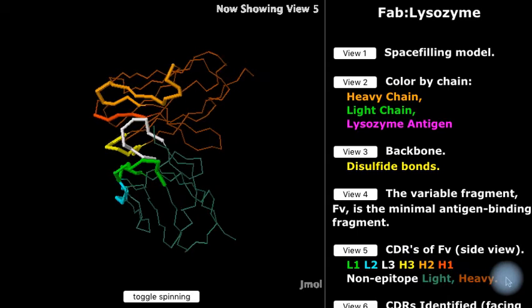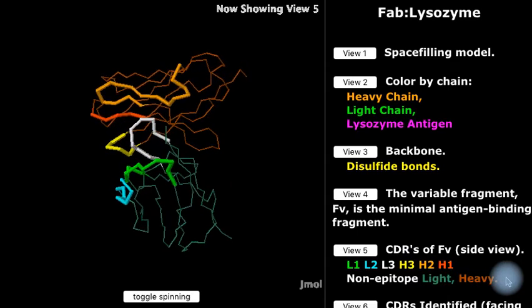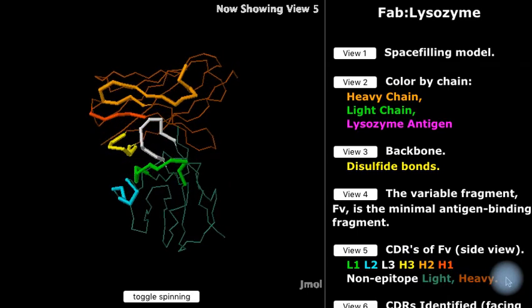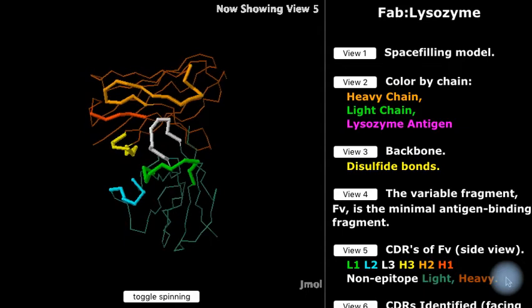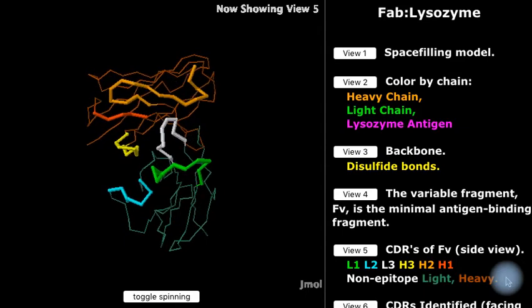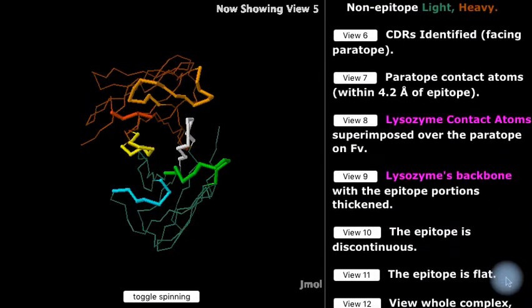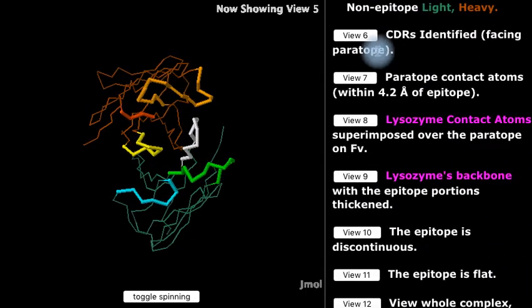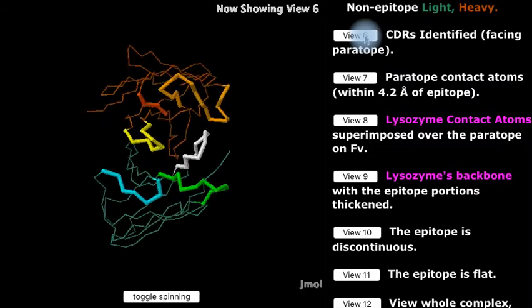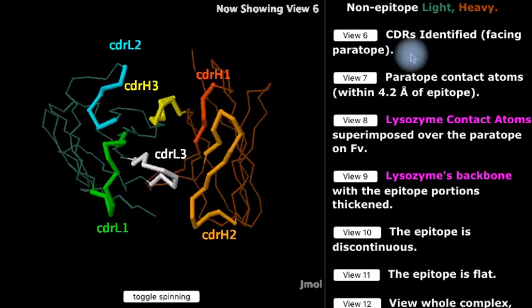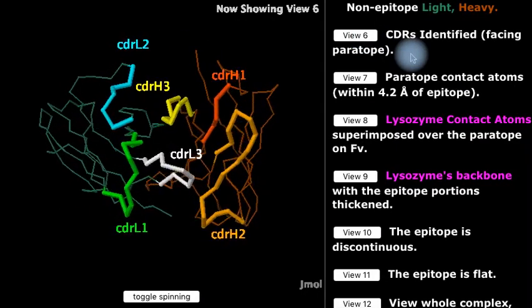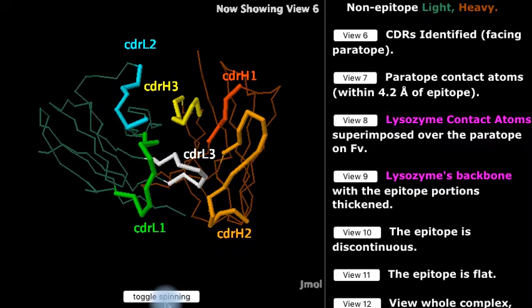The paratope consists of six loops called complementarity determining regions, or CDRs. The light chain contributes three of these CDRs, and the heavy chain the other three. The two CDRs in the middle, which are called CDR3 in each case, are the most variable and contribute the most to antigen binding specificity.